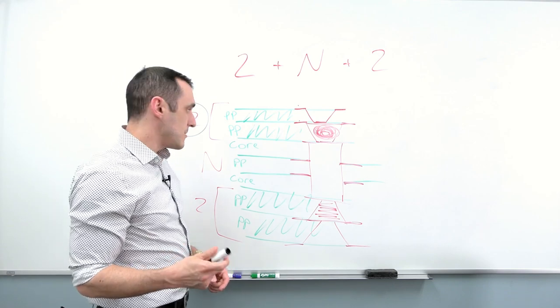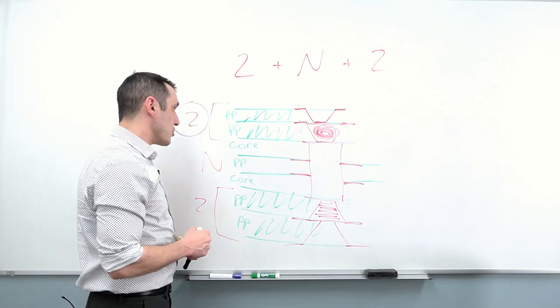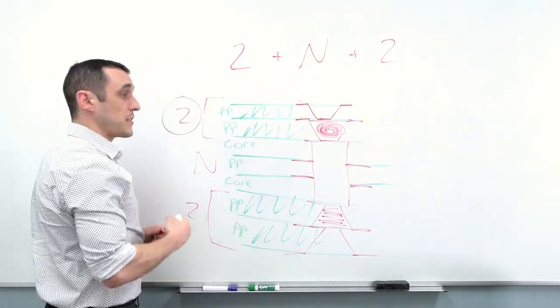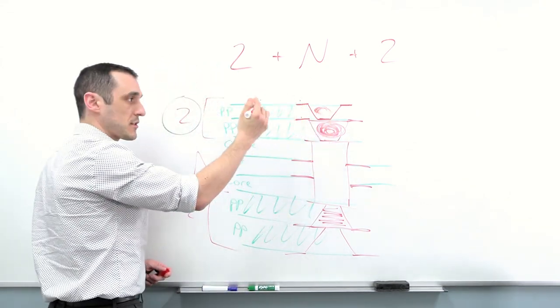Fabricators that do HDI PCB manufacturing will let you know or they'll be able to show you their standard HDI PCBs that they can create. Here we've just shown 2+N+2, but this could be, let's say, a 3+N+3.